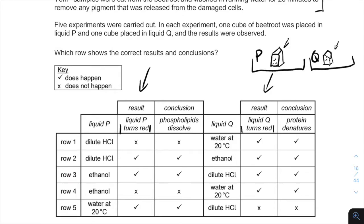So, first of all, you should remember that water at 20 degrees usually doesn't make any difference for a lipid bilayer of plants or humans. And using the method of elimination, you can just remove rows one and five.